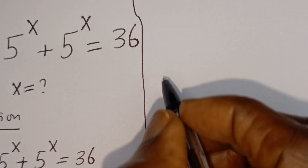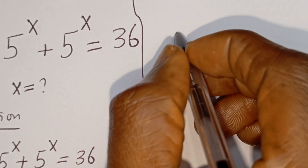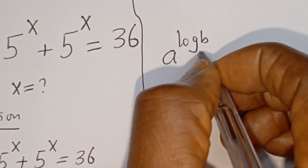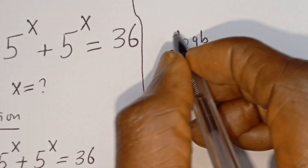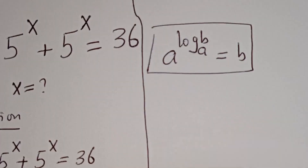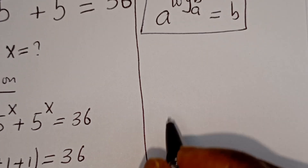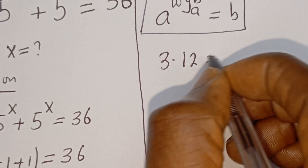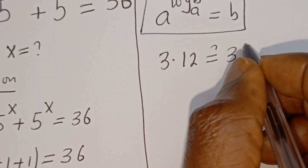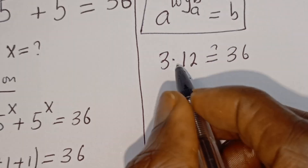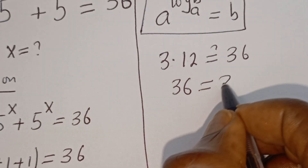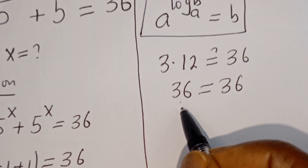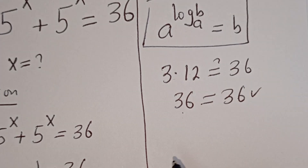Take note that if you have A to the power of log B base A, this is equal to B. Therefore our equation becomes 3 multiplied by 12 must equal 36. That gives us 36 is equal to 36 — the left-hand side equals the right-hand side, which is true.